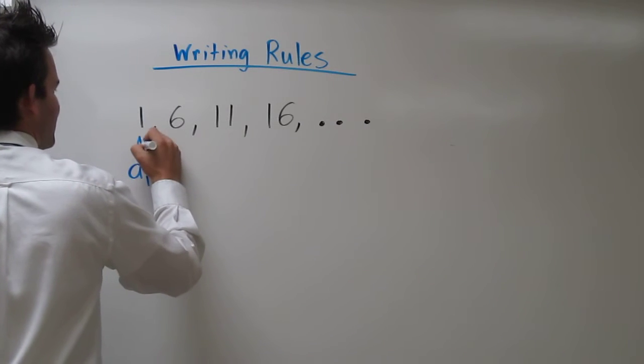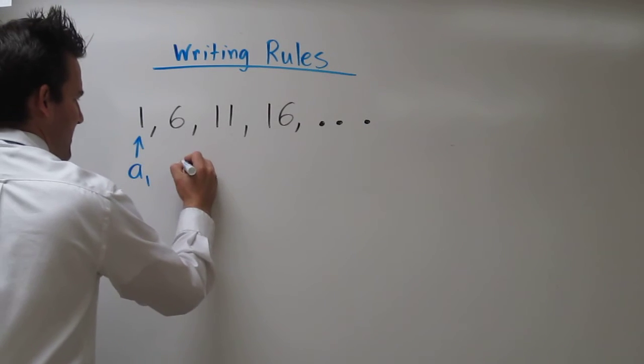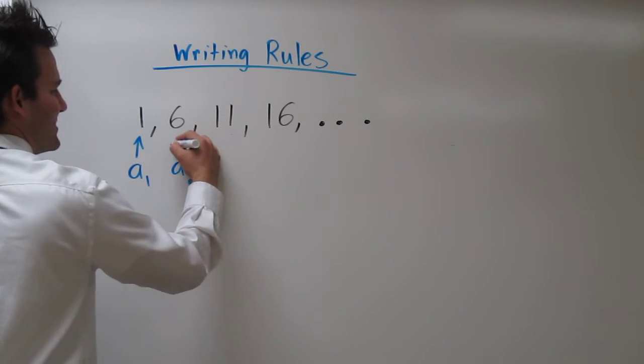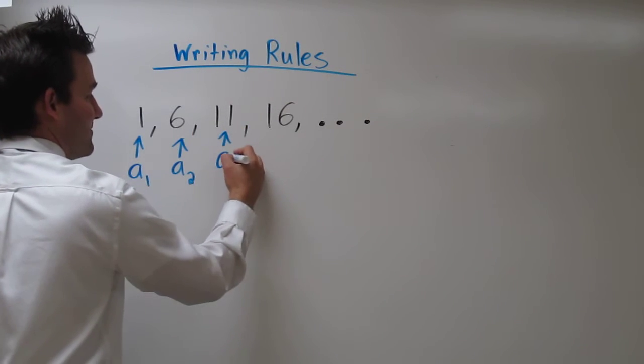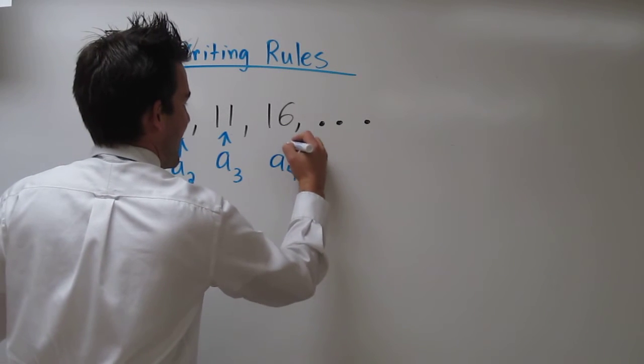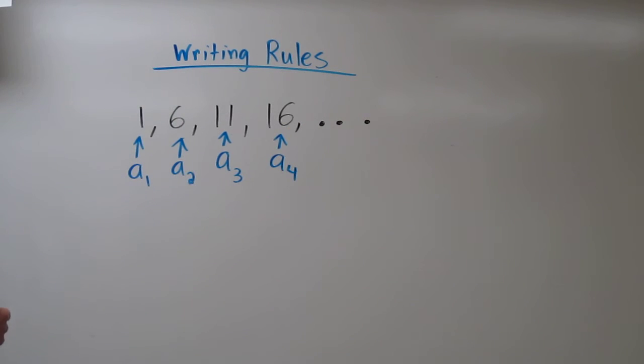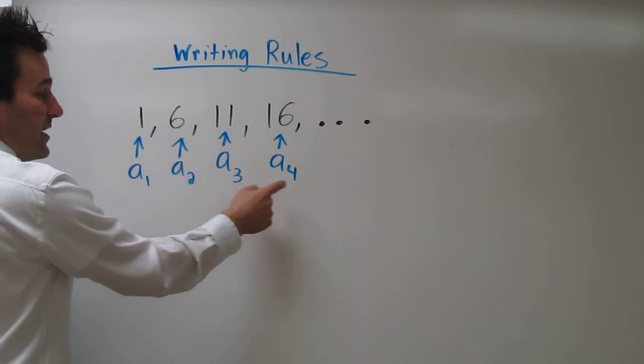a sub 1 is 1, a sub 2 is 6, a sub 3 is 11, and a sub 4 is 16. It's clear in this case to see what our domain is: 1, 2, 3, 4.